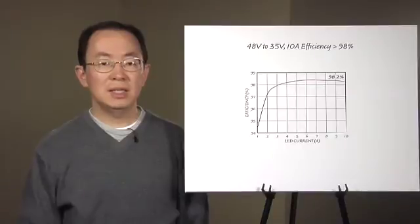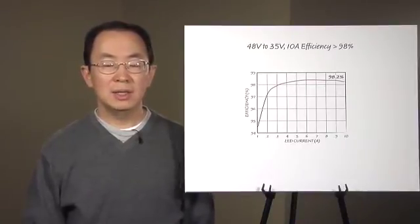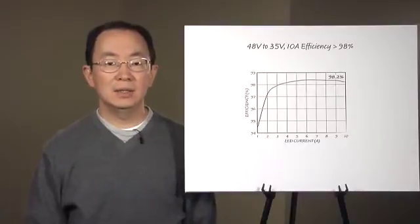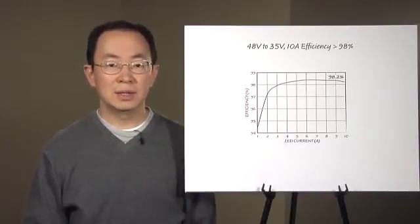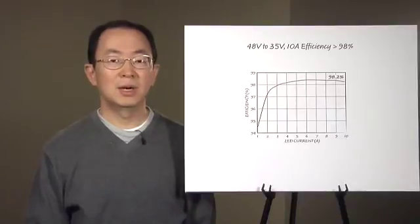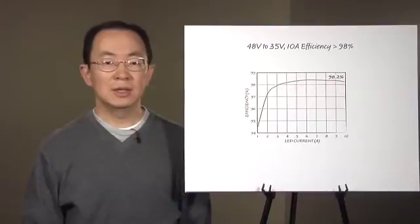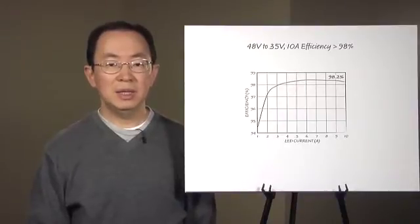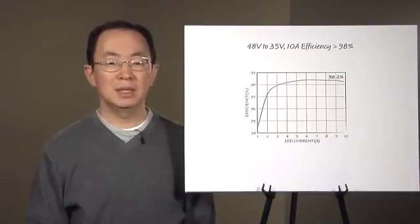Should the efficiency be 97%, it doesn't look too bad. But when running the numbers, you will see that you need to dissipate 3.5W more power on top of the original 6.5W loss. This is a 50% increase. That means either your PCB needs to be bigger or you run at a higher temperature if your efficiency is just 1% lower.